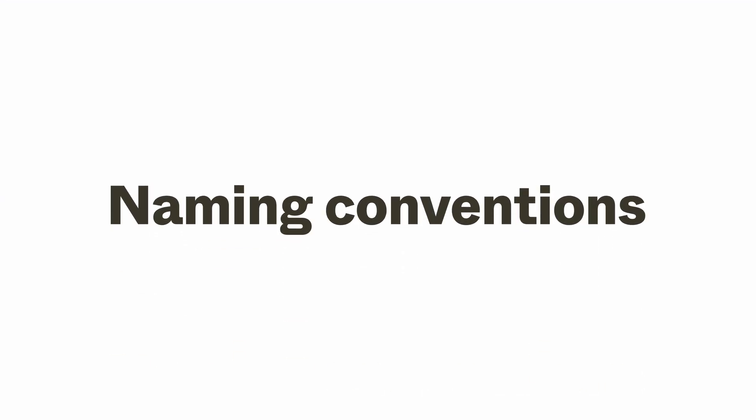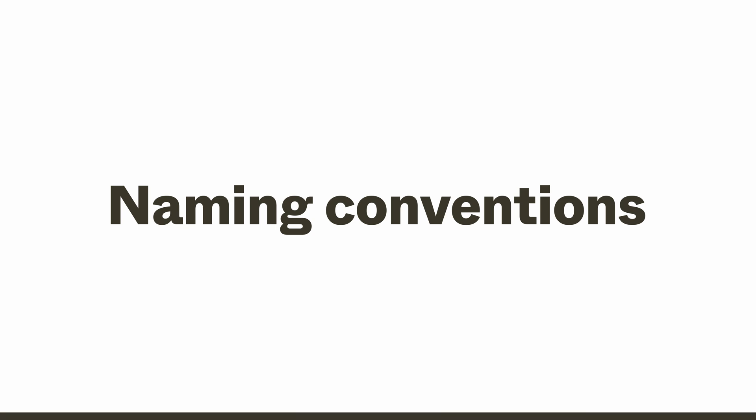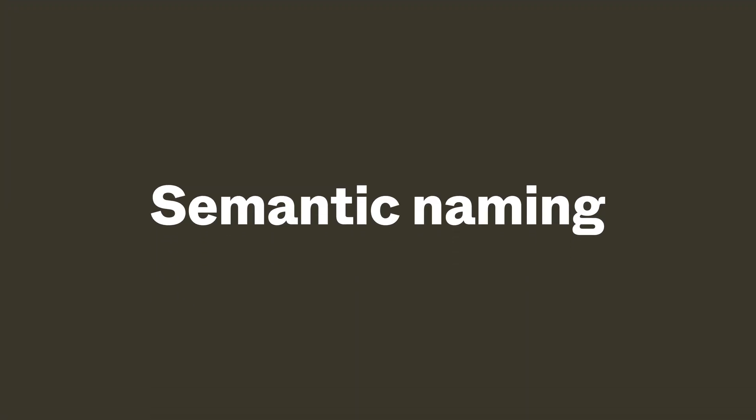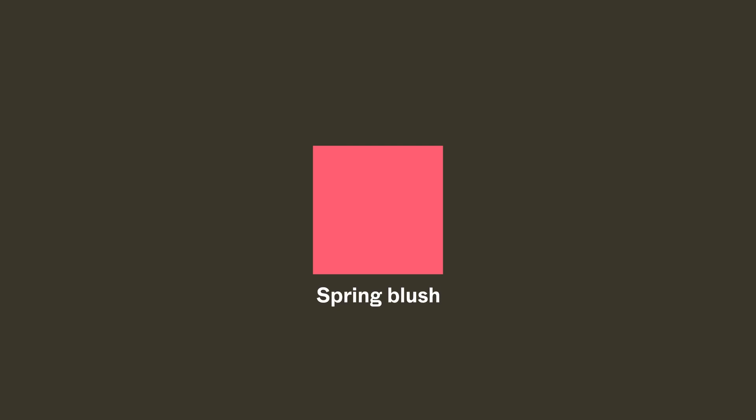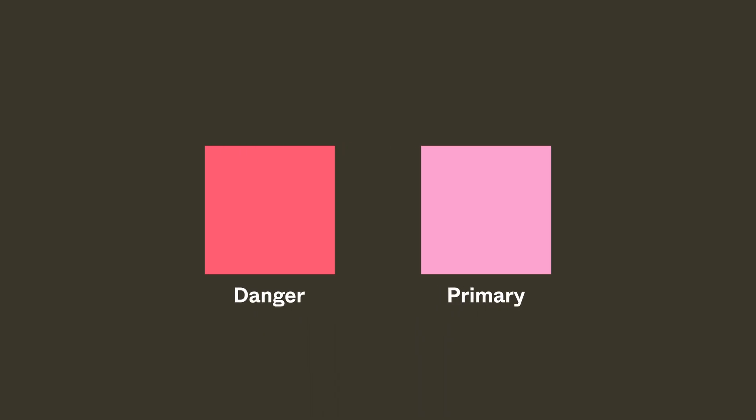A naming system makes it easier to find, understand, and apply elements in your design system. Take color for example: instead of evocative names that describe a color or hex codes that abstract it, consider the function of the color and how you'll use it. Semantic naming — names that convey meaning — makes application easier. Naming a color 'danger' or 'primary' is more helpful than 'red' or a jumble of letters, and it can also reduce incorrect usage.